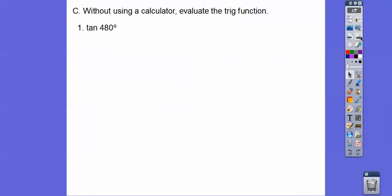Without using the calculator, evaluate the trig functions. The tangent of 480. 480 is the same as 360 plus 120. 360 is a complete circle, so we can wipe that out because we're starting over with a 120 degree angle. So the tan of 480 is the same as the tan of 120. Well, 120 is over here in quadrant 2, where only sine is positive, the tangent is negative.